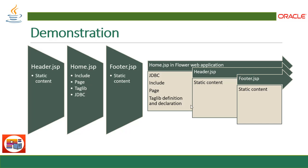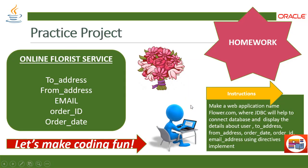Now it's homework time. Do the same thing at your end — try to build an online florist service with five parameters defined in a database: to address, from address, email address, order ID, and order date. Make a web application named flower.com where JDBC connects to the database and displays the details using directives, so you have dynamic content displayed in your home page.